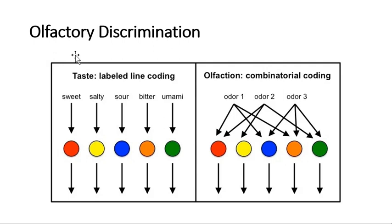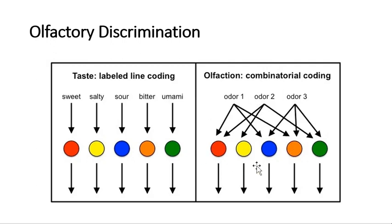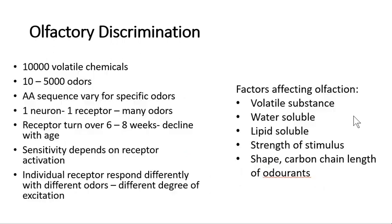Now let's see how we discriminate different odors. For taste, the labeled line principle applies — one taste stimulates one receptor. But in olfaction, one odor stimulates many receptors, and one receptor can respond to many odors at different levels of firing. So it's not a one-receptor-one-neuron rule; instead, there are different levels of excitation and different response patterns of receptors for different types of odors.